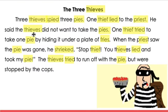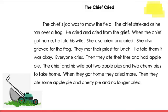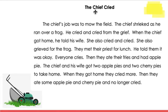Nice reading. Hopefully you were able to get all of those highlighted words with the IE vowel team and you were able to read it at least once to work on that smoothness. Let's look at another story. This story is called The Chief Cried. Remember, when you come to a word if you're not sure how to read it, you look carefully and find those patterns that are working together. The CH is working together to say CH.